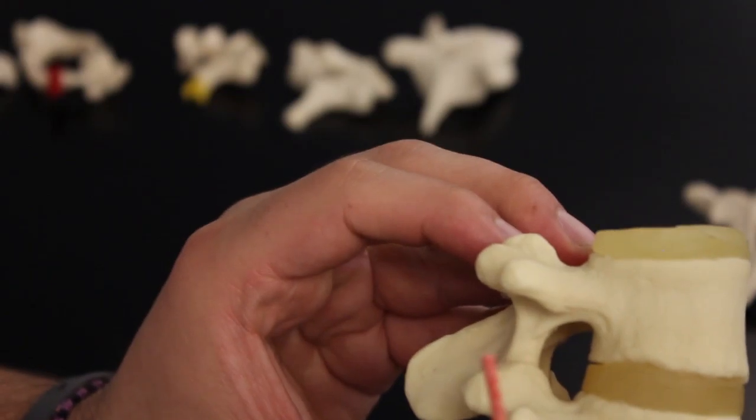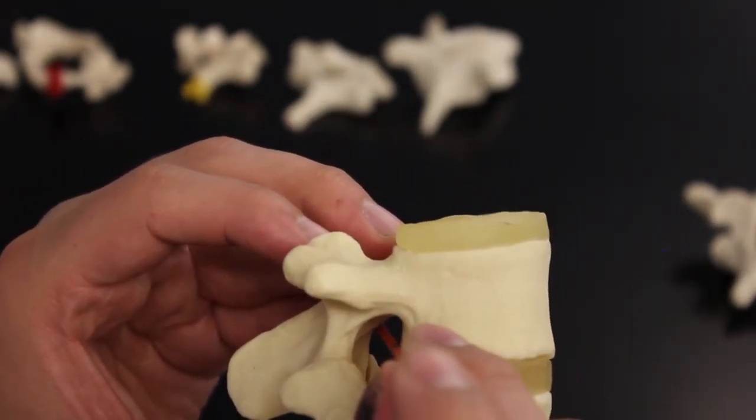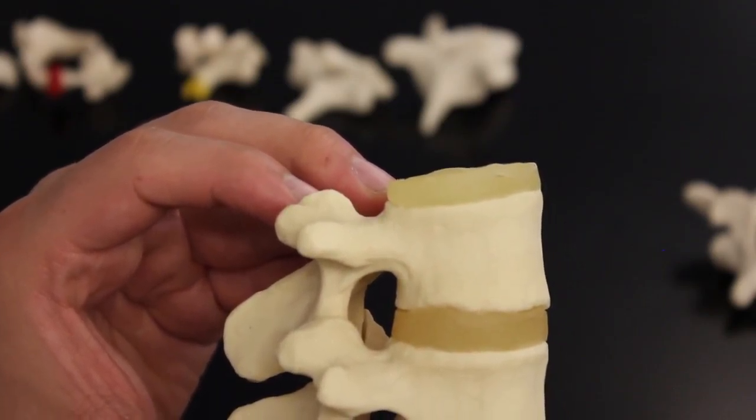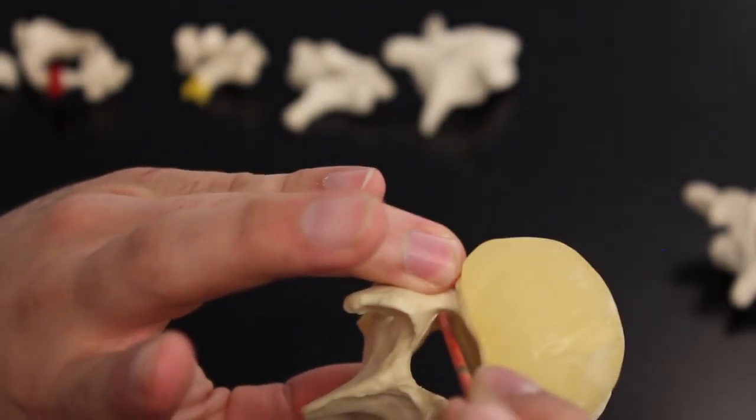This right here is actually going to be called the intervertebral foramen. Intervertebral foramen is where your spinal nerves run through. Make sure you don't get that confused with the vertebral foramen - this is the vertebral foramen, and this is the intervertebral foramen.